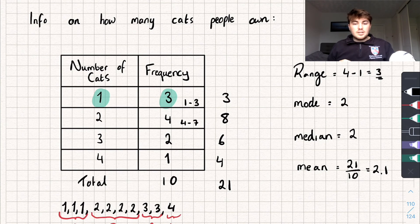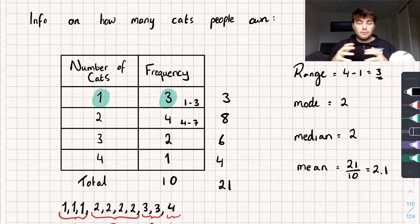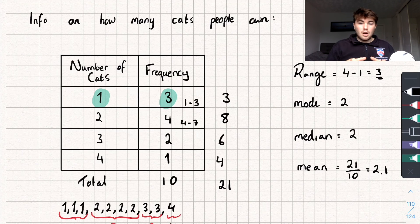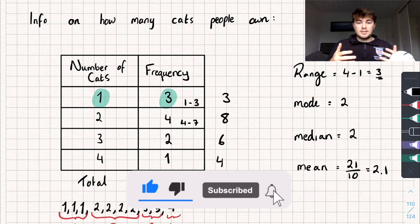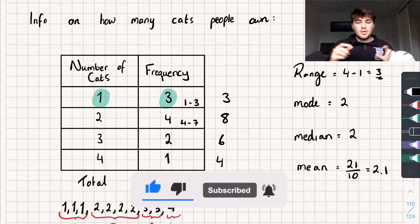So there you go. That's how to calculate all of the averages from a frequency table. Hopefully this was useful. If it was subscribe, like the video, go over to my channel for tons of other tutorials, past papers, and you can look at my TikTok for loads of worked exam questions that will be in the description. So thanks for watching.